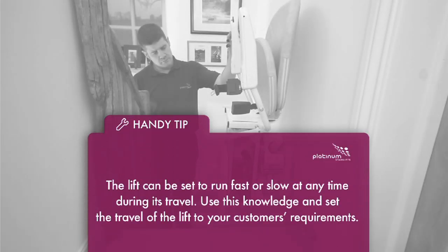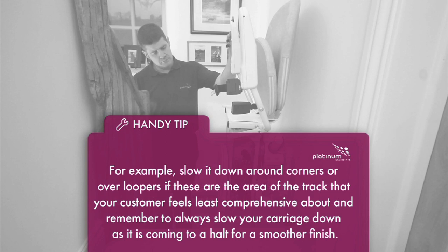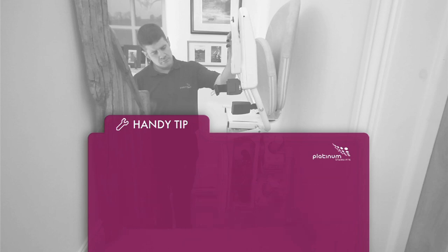Handy tip: The lift can be set to run fast or slow at any time during its travel. For example, use this knowledge and set the travel of the lift to your customer's requirements. For example, slow it down around corners or over loopers if these are the areas of the track that your customer feels least comprehensive about. And remember to always slow the carriage down as it's coming to a halt for a smoother finish.